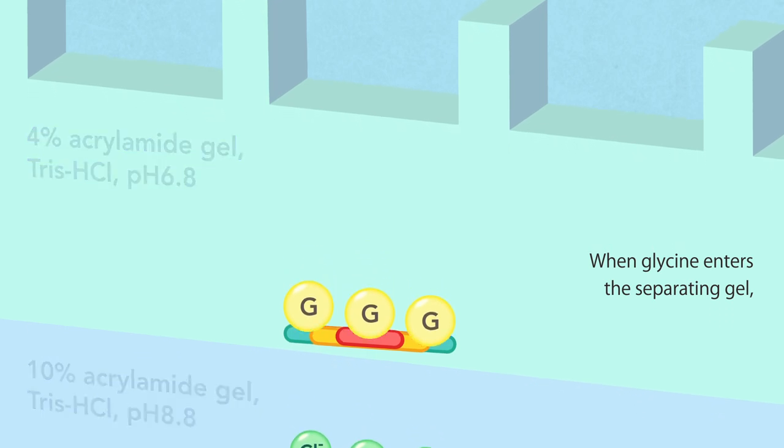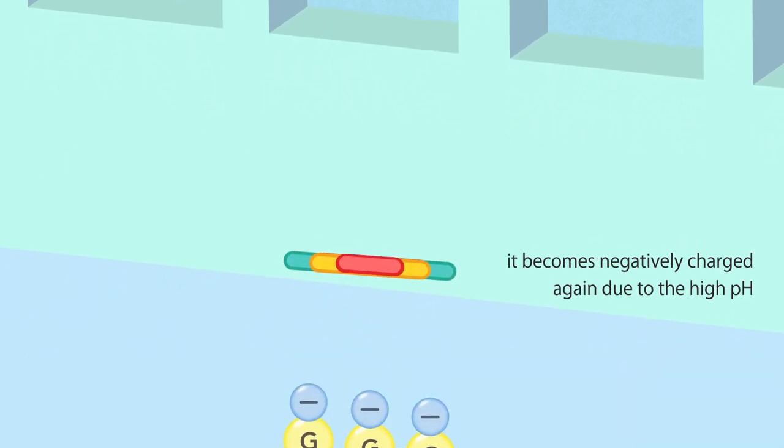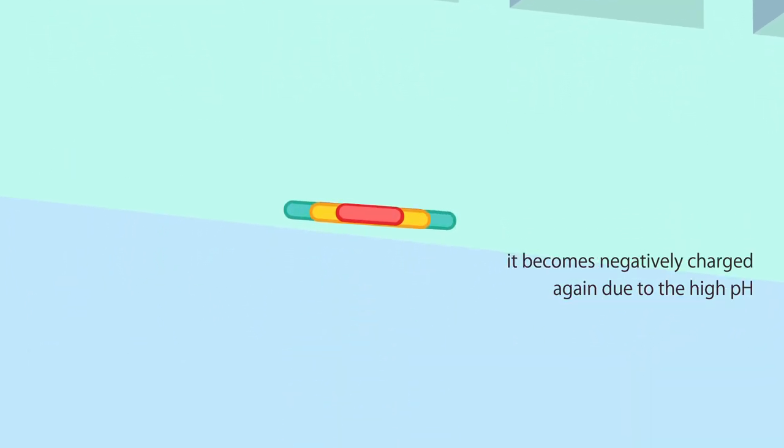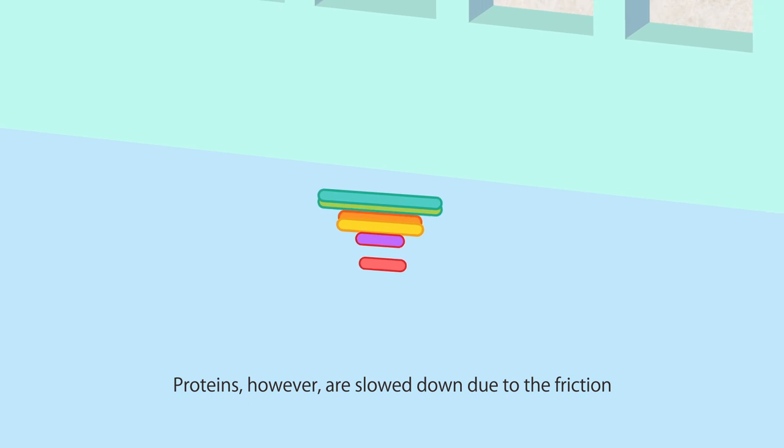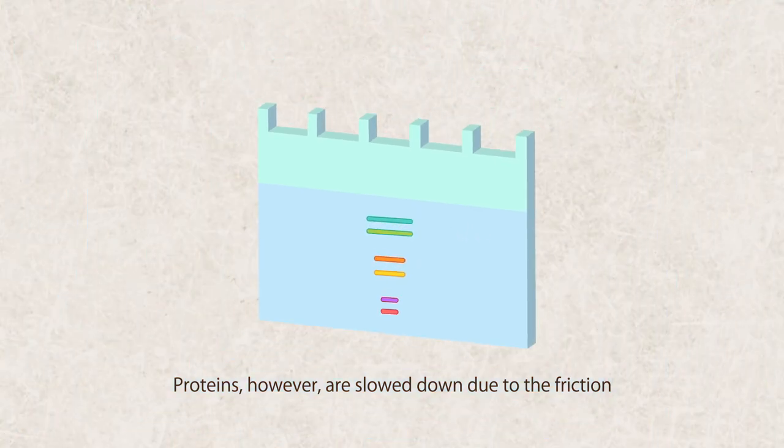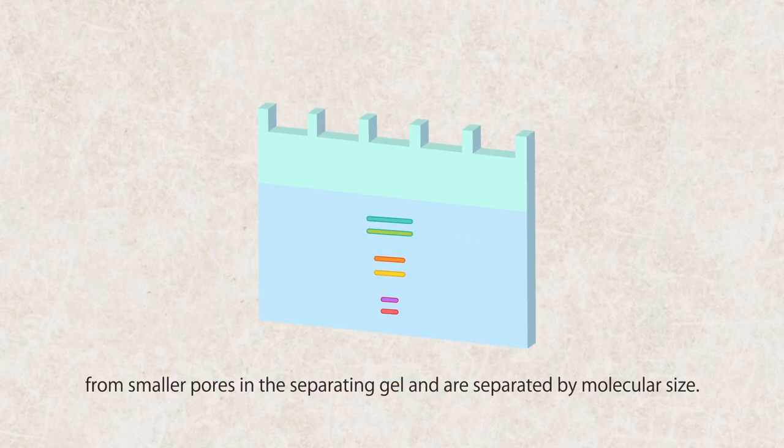When glycine enters the separating gel, it becomes negatively charged again due to the high pH and speeds up to catch up with chlorine ions. Proteins, however, are slowed down due to the friction from smaller pores in the separating gel and are separated by molecular size.